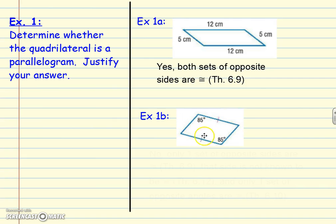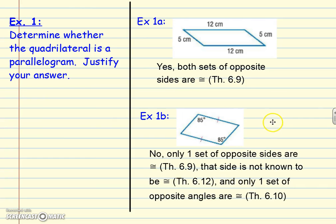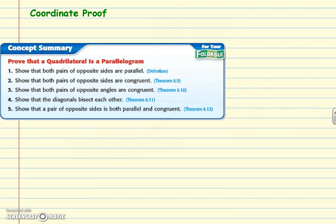In the next example I have opposite sides that are congruent, but are they parallel? No, we don't know that. Are the other sides congruent? No, we don't know that either. We only know one set of opposite sides is congruent — that's not sufficient for 6.9 or 6.12 — and we only know one set of angles, so that's not 6.10. We don't have enough information.